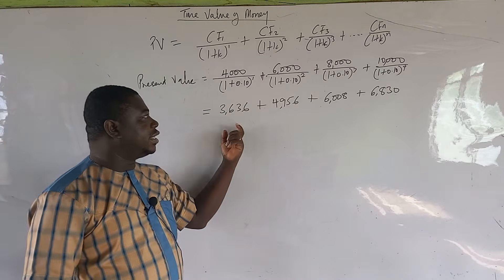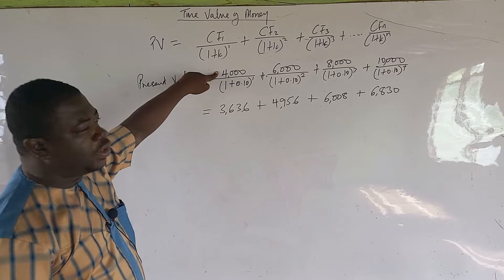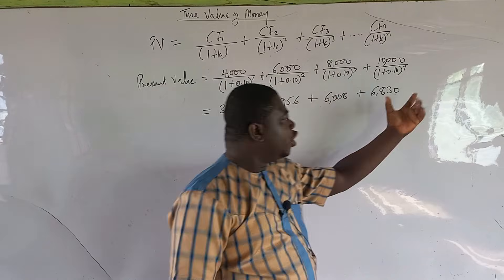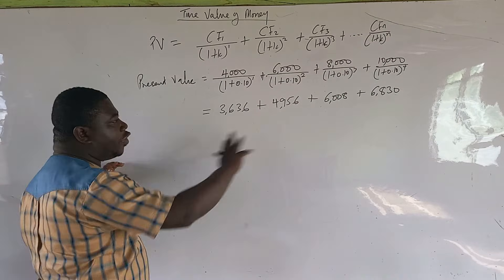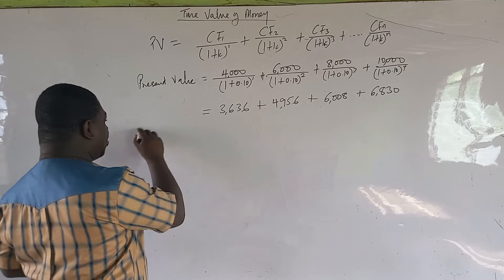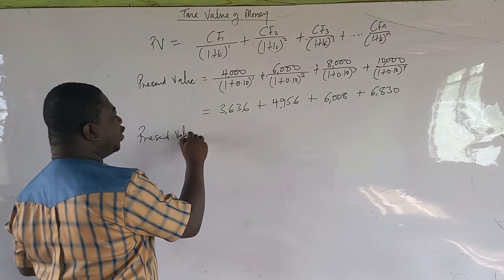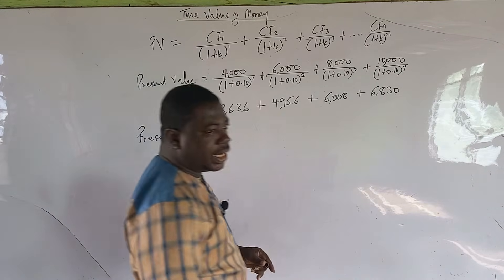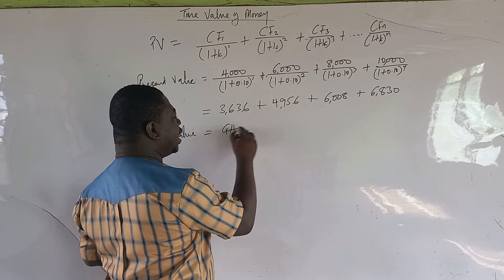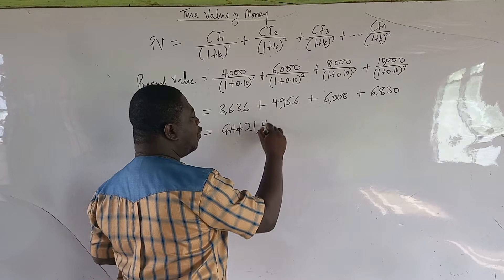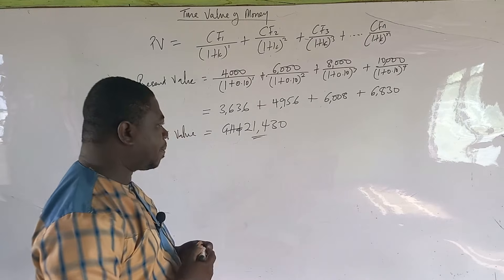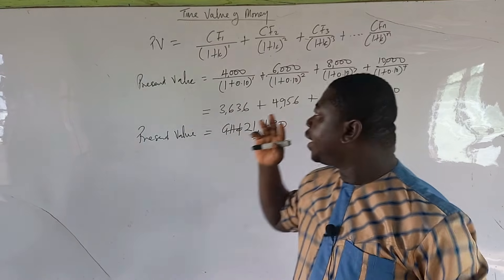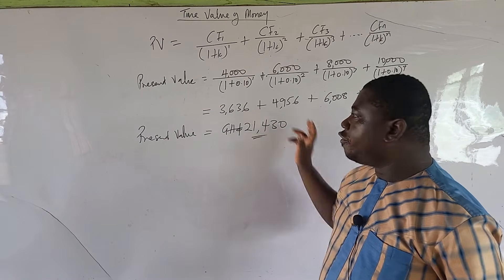The 3,636 Ghana cedis is the present value of the 4,000; the 4,956 is the present value of the 6,000, and so on. We have found the present value of each of the cash flows. When we add them all up, the total present value is 21,430 Ghana cedis — that is the total return on the investment.